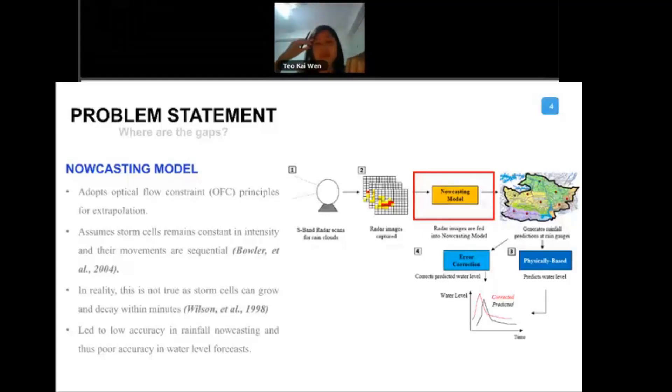With the future rainfall predictions, you then fit it into a physically-based model. This physically-based model is something like SWMM or InfoWorks model. It actually gives you water level at various locations of the catchment. We also have a small error correction module that will help us correct the error. So you have water level forecast based on this setup.